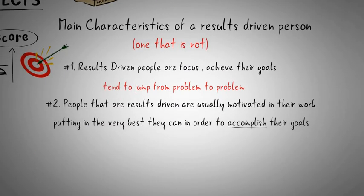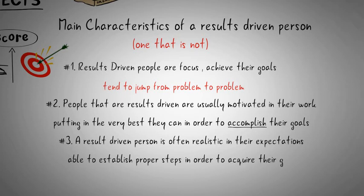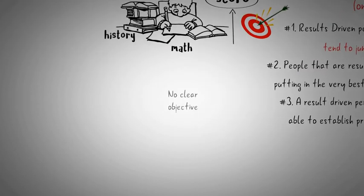Characteristic number three: A result-driven person is often realistic in their expectations and thus is able to establish proper steps in order to acquire their goal. Someone not result-driven, on the other hand, may not have a clear objective established or could have a less realistic goal resulting in them working at a suboptimal pace that is not productive at all.